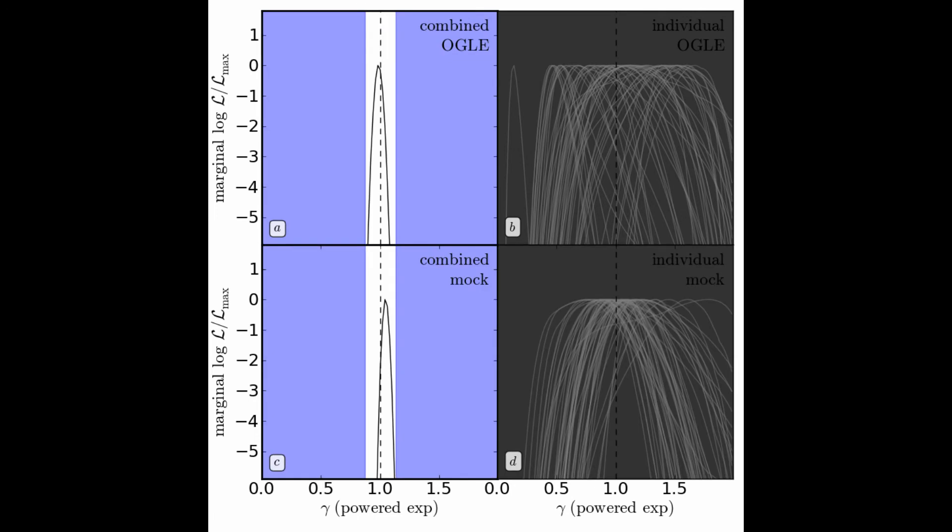If we compare the two left panels, the two joint likelihood functions both peak at gamma equals 1, which is exactly the value for the DRW model. So the OGLE data light curves are in excellent agreement with the DRW model.